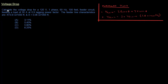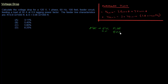Voltage drop is an important calculation because if the voltage drop is too high on your circuit, then the load equipment — the end user equipment — might not function properly or might even fail with time. The NEC recommends a 5% voltage drop on feeder circuits and a 3% voltage drop on branch circuits.